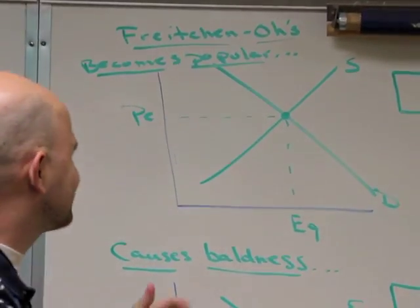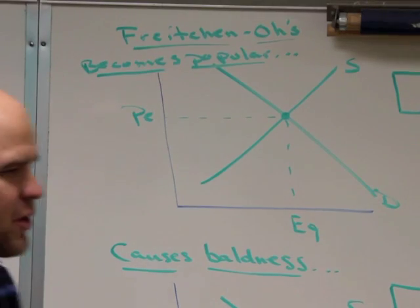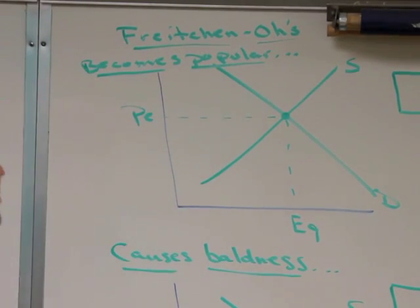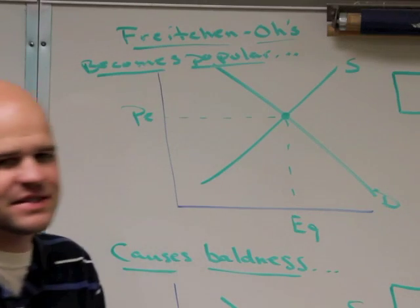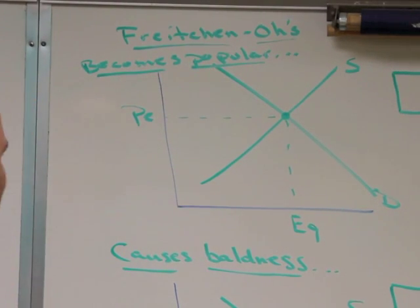So supply and demand. Hopefully you already know the basics about supply and demand, that supply is upward sloping, demand is downward sloping.